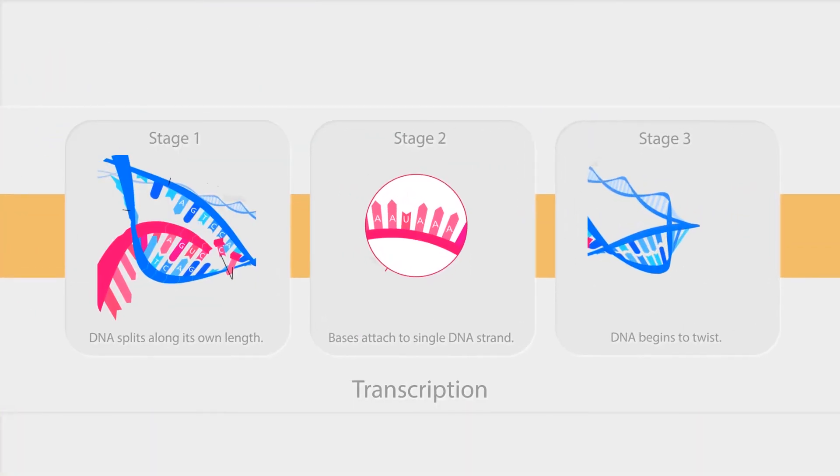Stage 1. The original DNA double helix splits open at several points along its length. This process produces areas where there are two separate single strands. Stage 2. Free bases from the DNA strand are attached to both of the single strands of DNA. The order in which free bases join to the single DNA strand is determined by the DNA bases that are already present on the single strand.